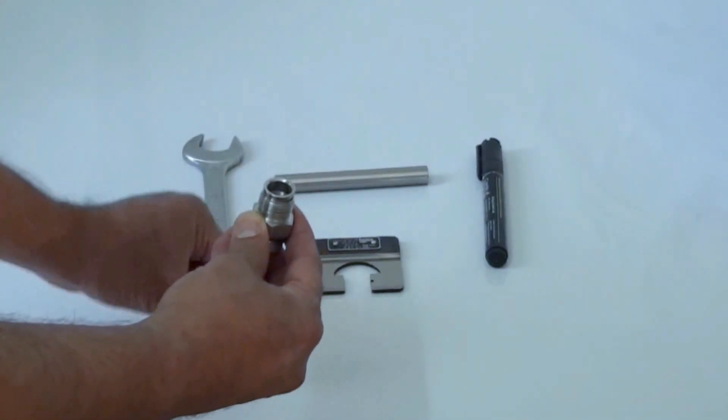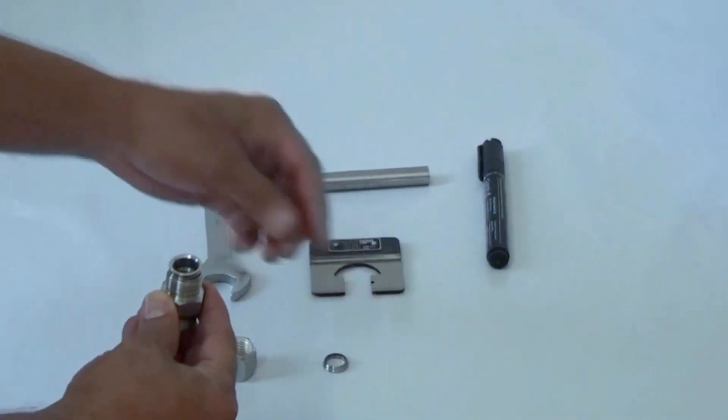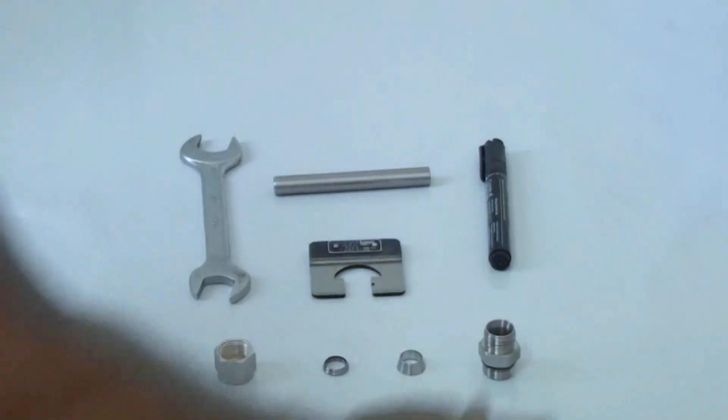The Well-Lock Tube Fitting consists of a nut, a back ferrule, a front ferrule and the body.